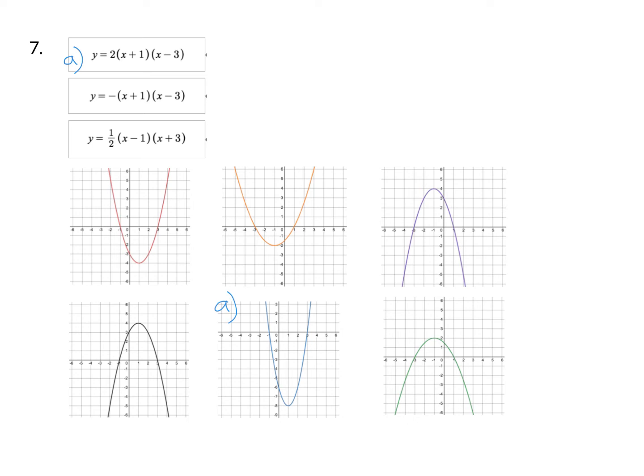So let's look at part B here. Notice right away we have a negative value for A. So that means it has to be upside down. That means we can eliminate this first one, the second one. It has to be one of them that's upside down. The purple, the black, or the green.